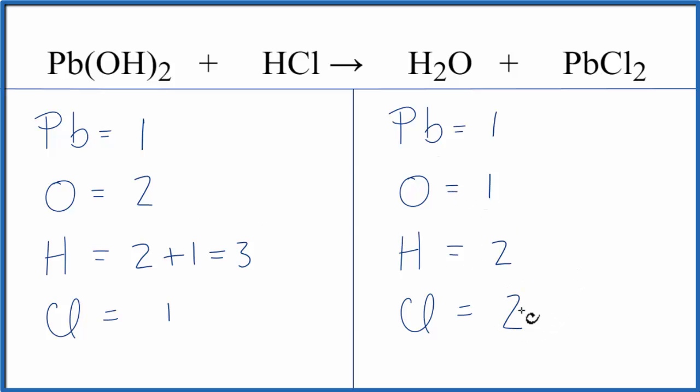Let's leave the oxygens and hydrogens until later and balance the chlorines. So we have 2 here, 1 here. We'll put a 2 in front of the HCl. This 2 applies to everything, so 1 Cl times 2. That gives us 2.